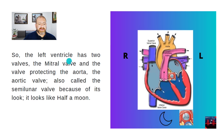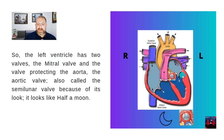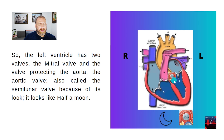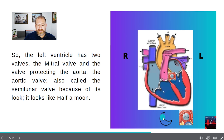So the left ventricle has two valves: the mitral valve, which is between the left atrium and the left ventricle, and the aortic valve — also called the semilunar valve — because of its look. It looks like half a moon, that's what the doctors and scientists say.